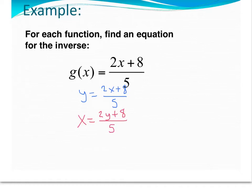The first thing that I want to do here is I want to get rid of that 5, so I'm going to multiply by 5 on both sides, and I'm left with 5x equals 2y plus 8.